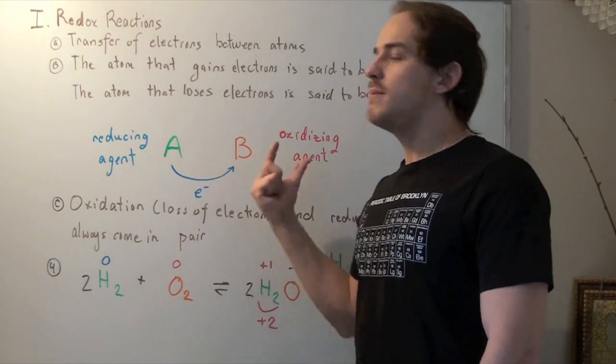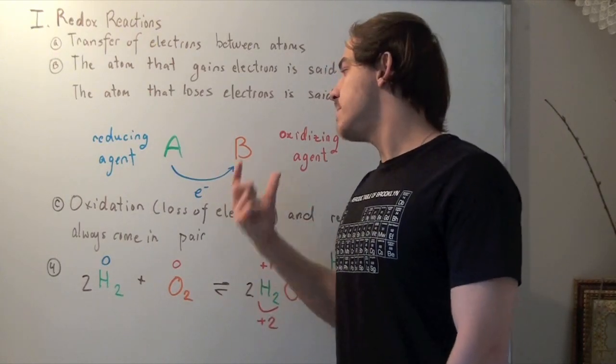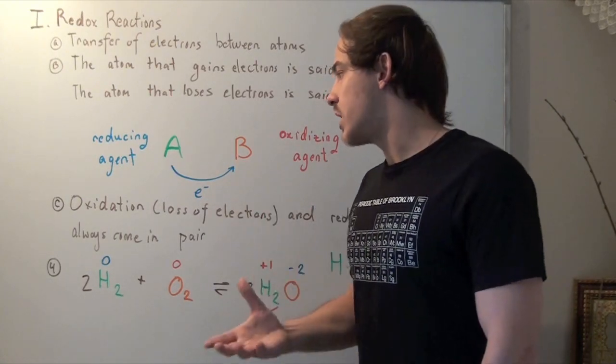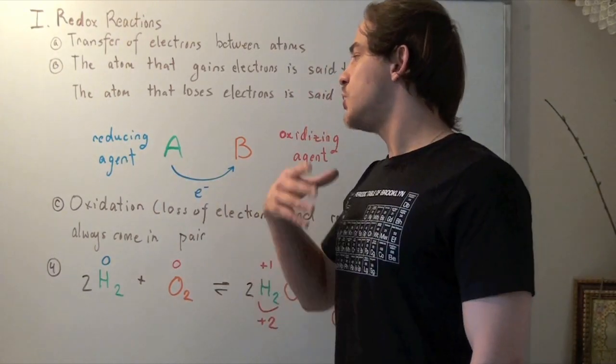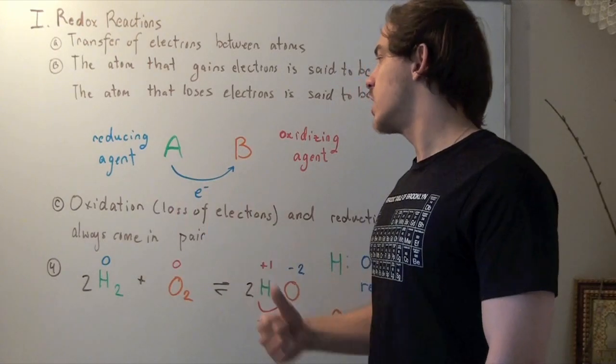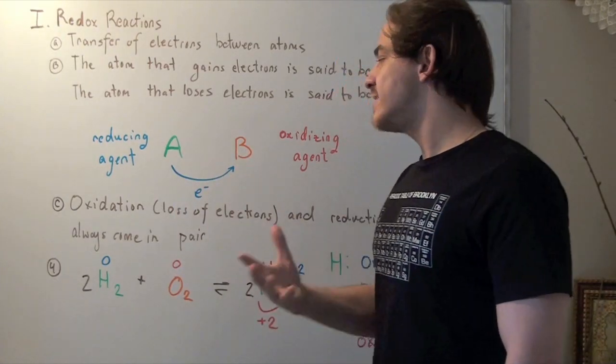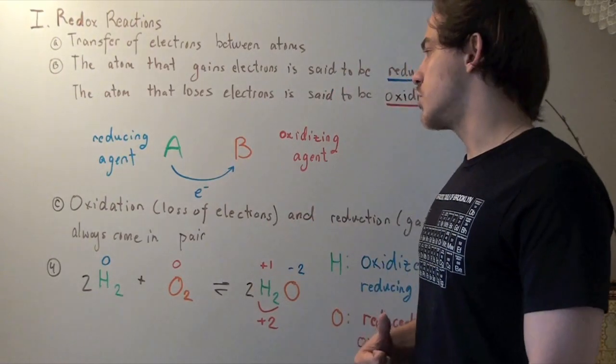So let's look at atoms A and B. Suppose atom A loses an electron while atom B gains that same electron. That means the charge of A goes from neutral to plus-one, while atom B gains an electron so its charge goes from neutral to negative-one.